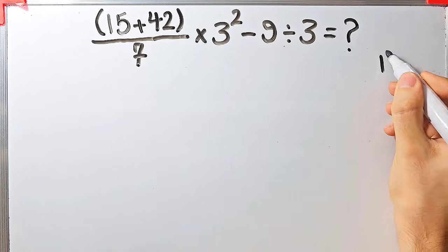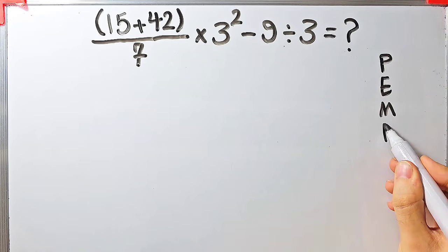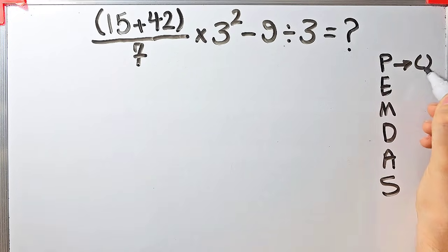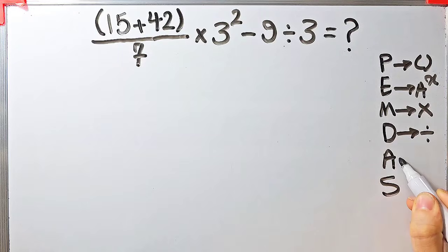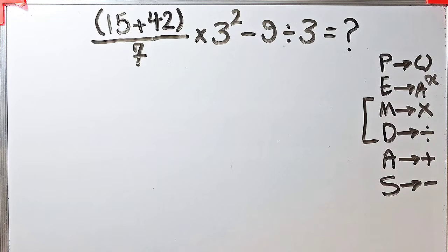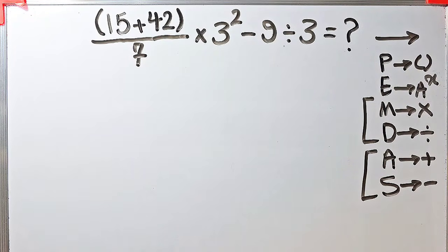To solve this question we need to follow the PEMDAS rule. PEMDAS shows the priority of mathematical operations. P stands for Parentheses, E stands for Exponent, M stands for Multiplication, D stands for Division, A stands for Addition, and S stands for Subtraction. Multiplication and division have the same level of priority; also addition and subtraction have the same level of priority. When we have both in an expression, we start from the left.